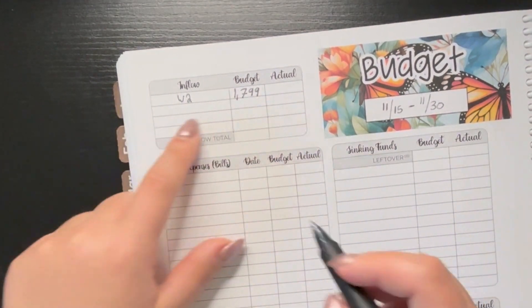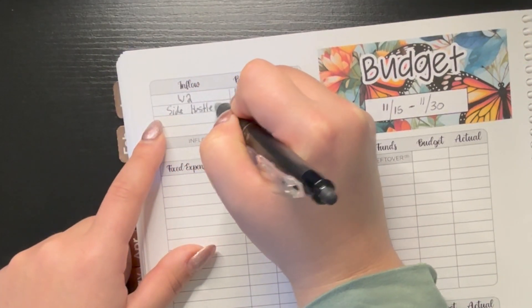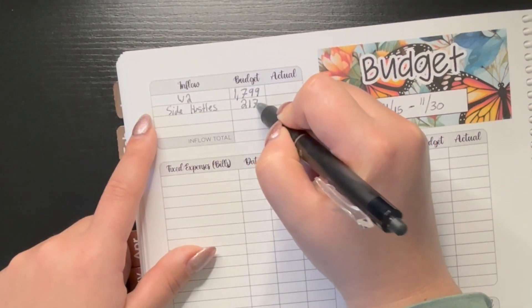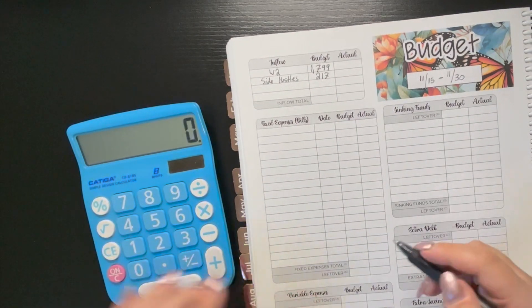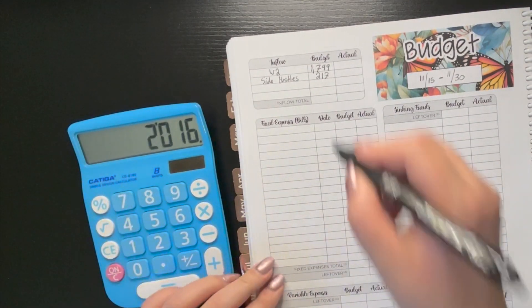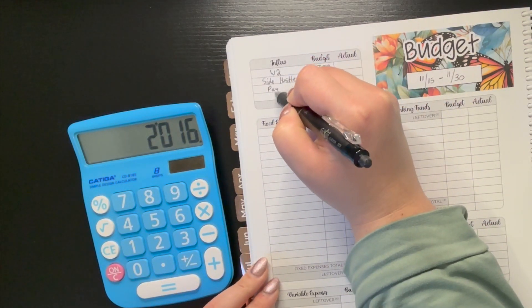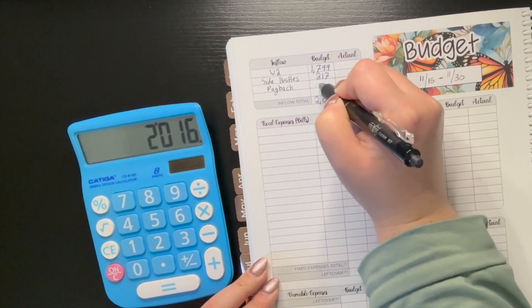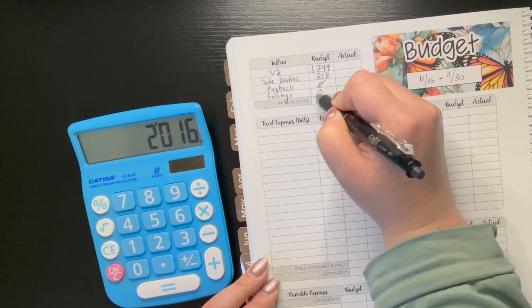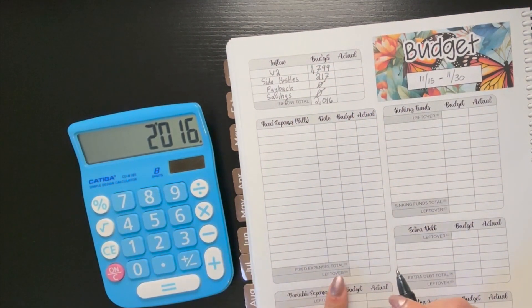So $1,792 and then we have Side Hustles. This is from Hosting Trivia, was $217. So if we add all of that up, $1,792 plus $217 gives us $2,016. I am not expecting anything from payback these two weeks or to pull anything from savings. So we're just going to mark those as zero in case anything changes when we do close out this budget.